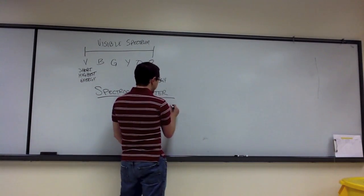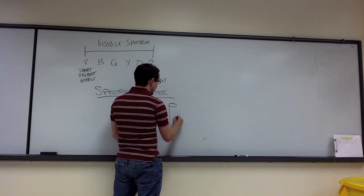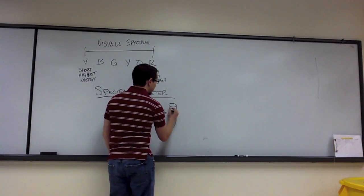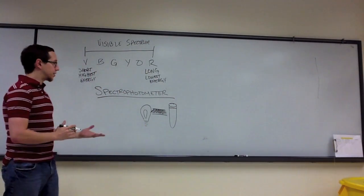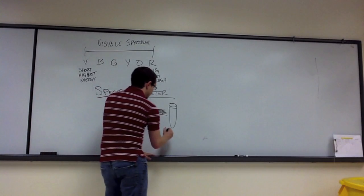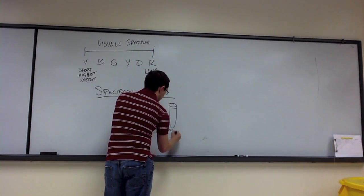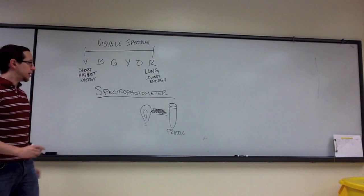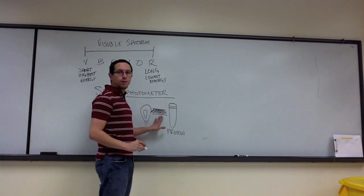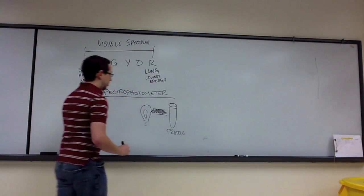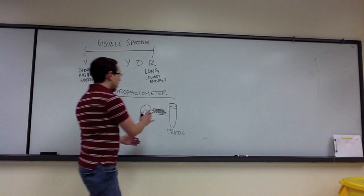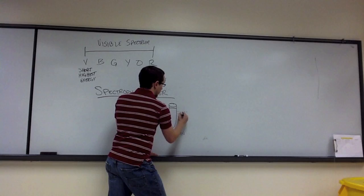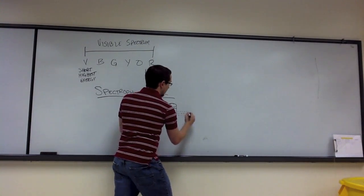What we can then do is we can add some sample that we want to test. So this sample is going to contain some biological molecule. In our particular exercise, this particular sample contained protein. And we want to see how well this protein can absorb a specific wavelength of light. And so this protein absorbs some of the light that passes through it, but some of that light is not going to be absorbed. It's going to be transmitted.